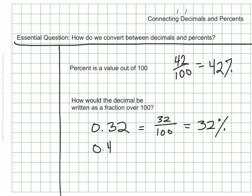4 tenths — well, that would be the same as 40 hundredths, which I can then write as 40 hundredths, and is then 40%.